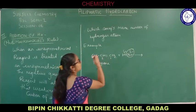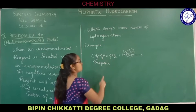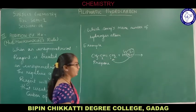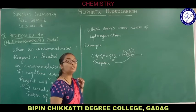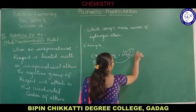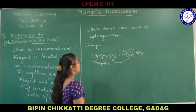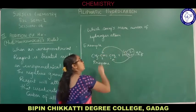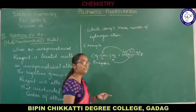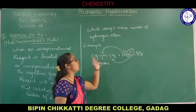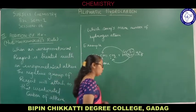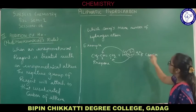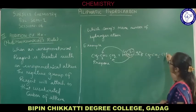Between carbon number one and carbon number two, which carbon has more hydrogen? Carbon number one has two hydrogen, carbon number two has one hydrogen. Towards that carbon with more hydrogen, the negative terminal will go and get attached. According to anti-Markovnikov's rule (also called the peroxide effect), bromide will go and get attached to carbon number one (CH₂), and hydrogen will go and get attached to CH.